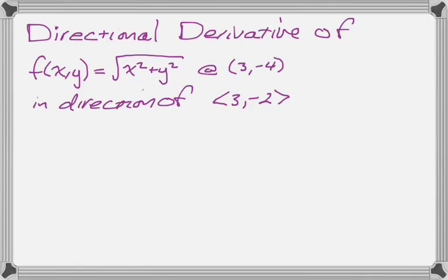Alright, we're going to find a directional derivative here. So it's the directional derivative of this function, which is the square root of x squared plus y squared, at the point (3, -4), and in the direction of the vector (3, -2).